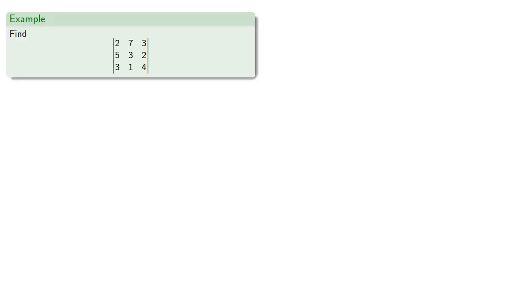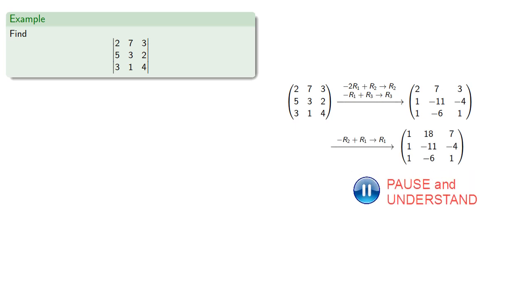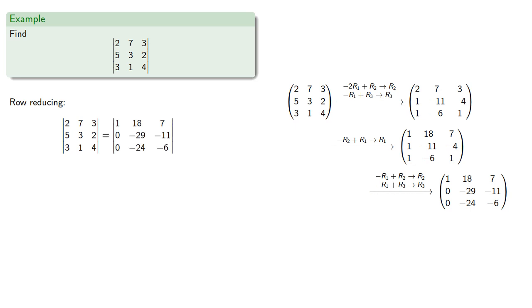To find the determinant of this matrix, we note that the leading coefficient of the first row is smaller than the leading coefficients of the second and third rows, so we'll subtract the first row multiple times from the second and third rows. Then we subtract the second row from the first to get a one in the leading position. Now we use the first row to eliminate the entries below the pivot. Since we didn't switch any rows or multiply a row by a constant, the determinant of the original matrix equals the determinant of the resulting matrix.